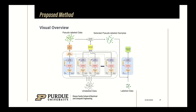Finally, the selected pseudo-labeled examples are used along with the labeled examples to train the model from scratch, and in this way we are able to exploit the latent task-relevant knowledge from the unlabeled data as well.